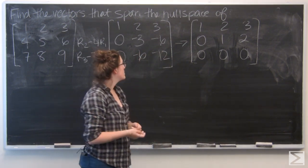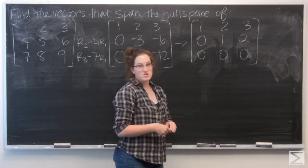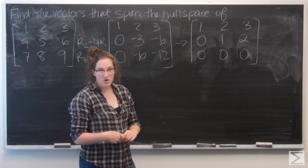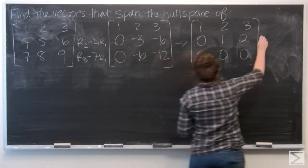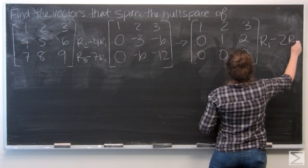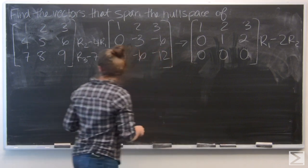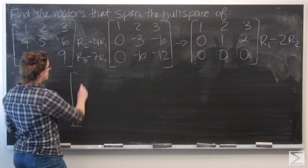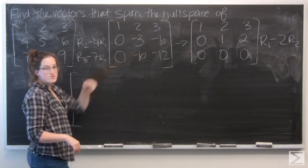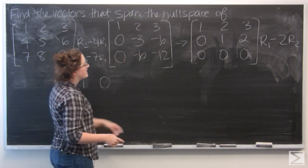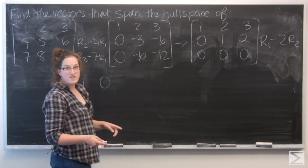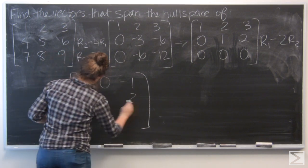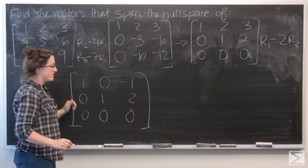So now I know that I'm going to have a free variable. But I want to put it in reduced row echelon form, so I want to clear that 2 out. I'm going to do so by subtracting 2 times the second row from the first row. So I have 1 stays as the first component, and I have 2 minus 2, which is 0, and 3 minus 4, which is negative 1. And the rest of the matrix follows through.